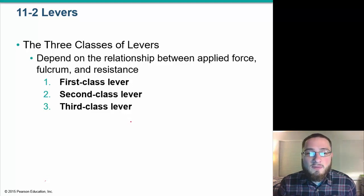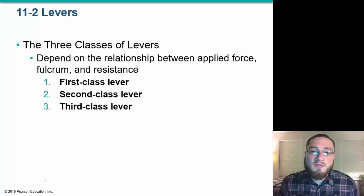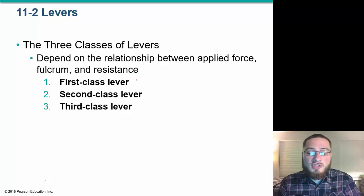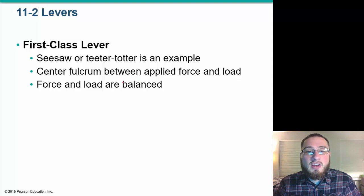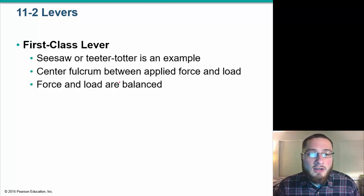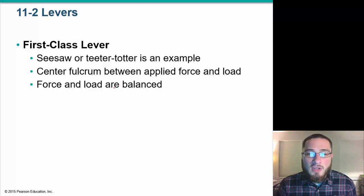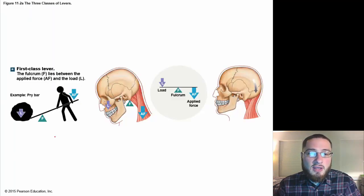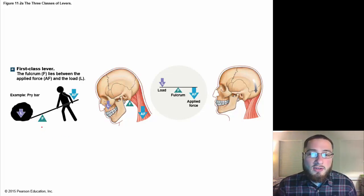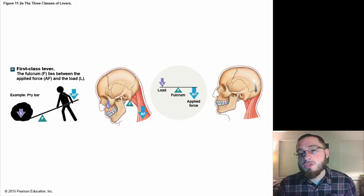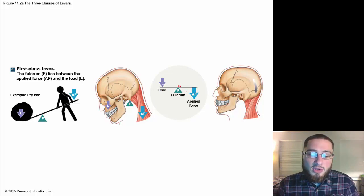There are three classes of levers. The difference is where the force is applied, where the fulcrum is, and where the resistance is. In the first class lever, it's like a seesaw or teeter-totter, where the fulcrum is in the center between the applied force and the load. Like a pry bar — you had your load, your applied force, and your fulcrum in the middle.